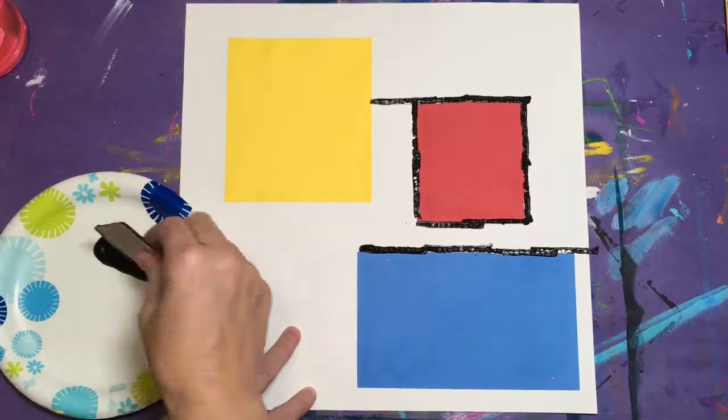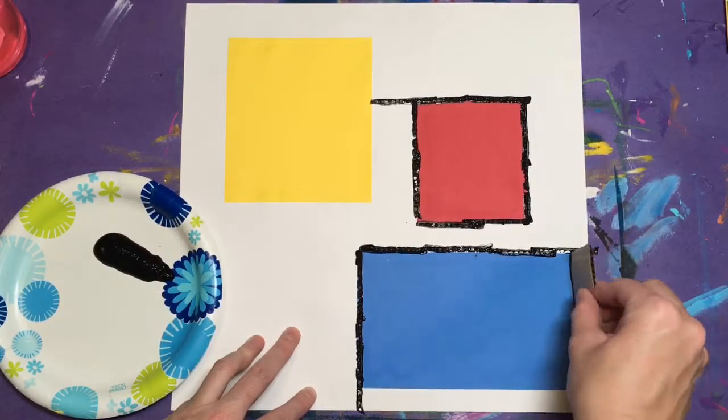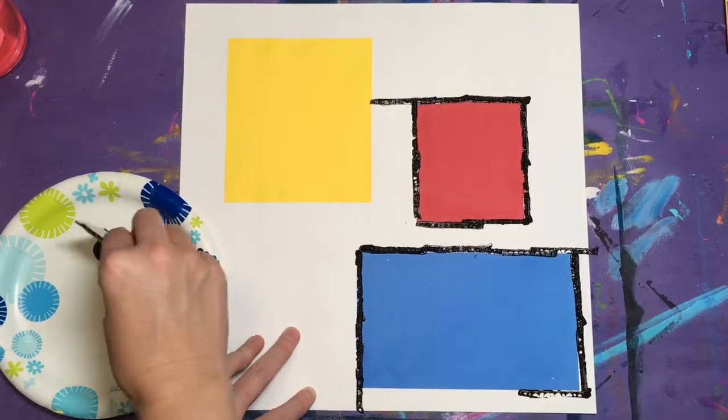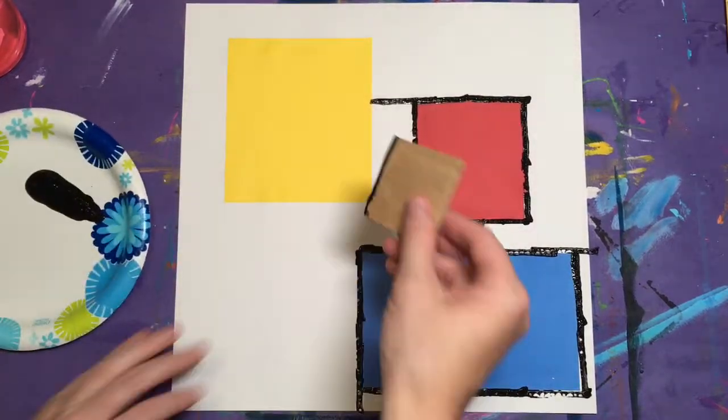Push down and pick it up. When you've gone around all of your shapes, then you can create more lines on the white paper to fill in the blank space.